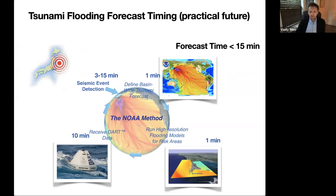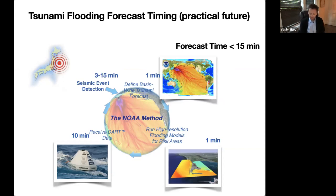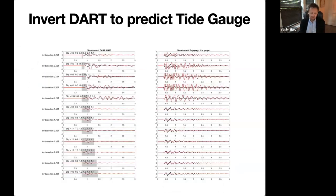Technically, in ten to fifteen minutes we can have a forecast — before even the closest coastline is hit. If you automate the whole process, you can have a forecast before any wave hits any coastline and warn people and get them out of harm's way. In theory that's straightforward; in practice there are many complications.